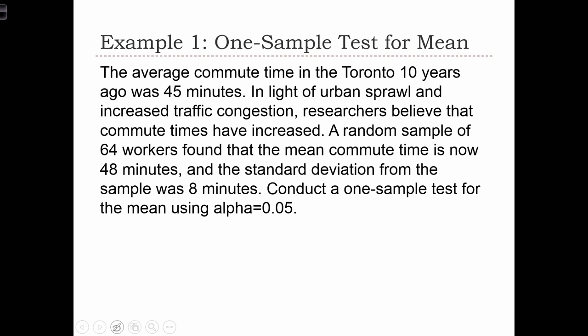Even though the first step is to state the null and alternative, let's quickly jot down the meaningful bits of information from the question. Let's do the sample statistics. A random sample of 64 workers, so n equals 64, found that the mean commute time, x-bar, equals 48 minutes, and the standard deviation was 8 minutes.